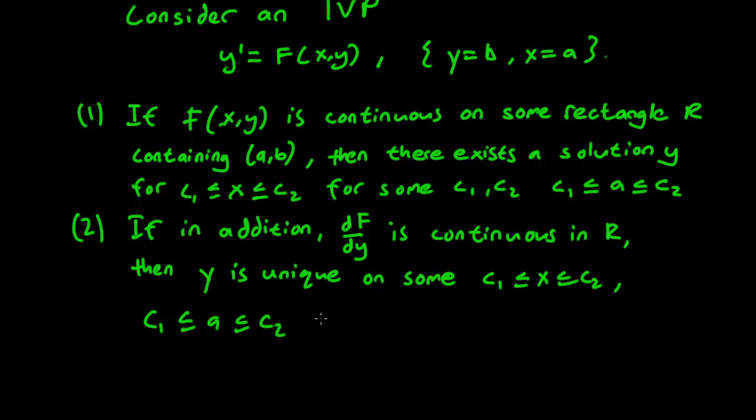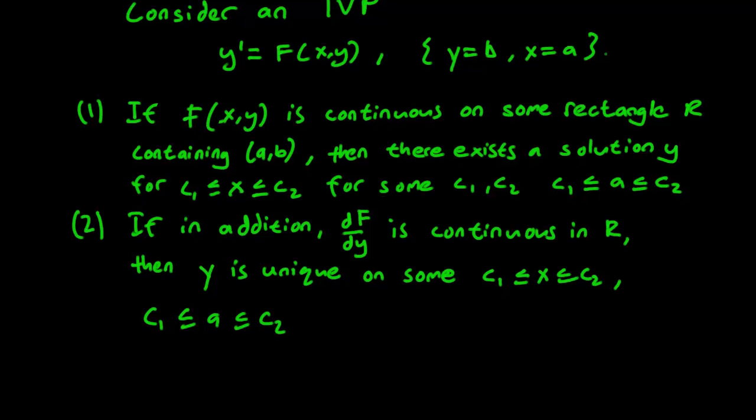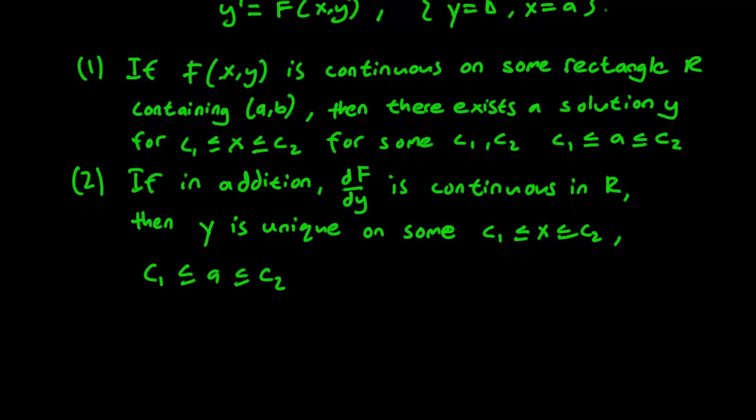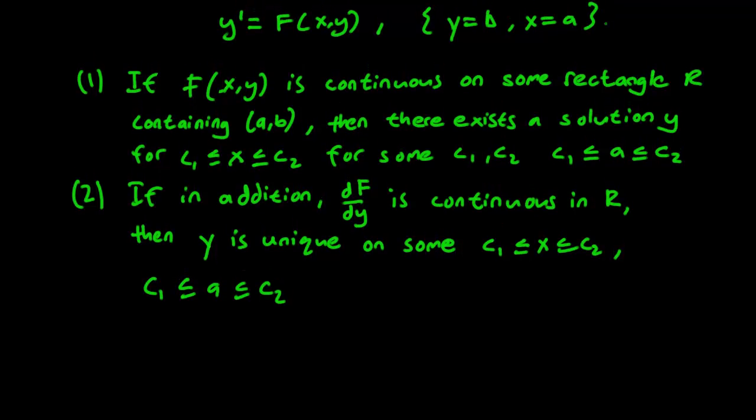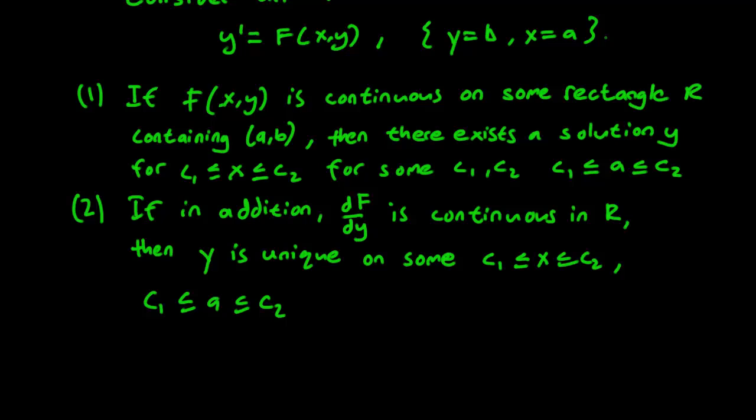In other words, to check if there is a solution for the differential equation around an initial value, we have to check the continuity of the function f and the continuity of its partial derivative. So we have an initial value (a,b). We have a little rectangle here. And if both f and df/dy are continuous on this rectangle, we know that we have existence and uniqueness for some interval c1 to c2.